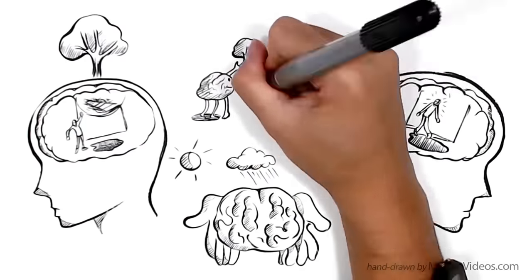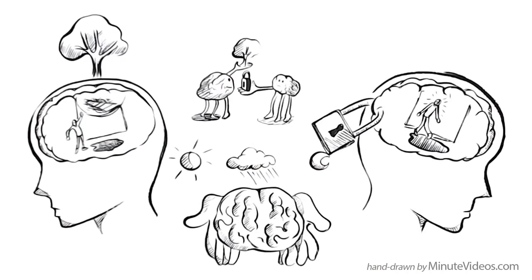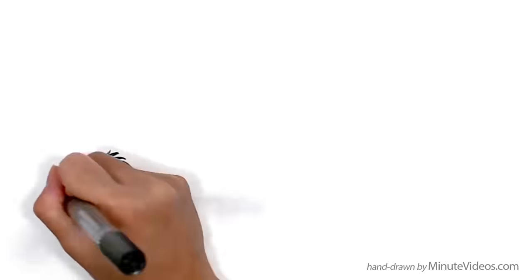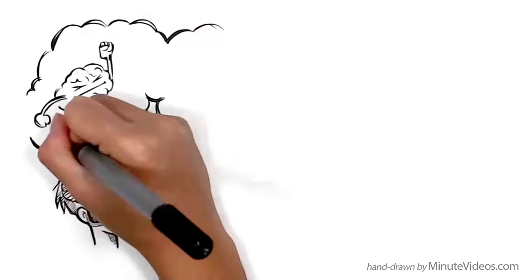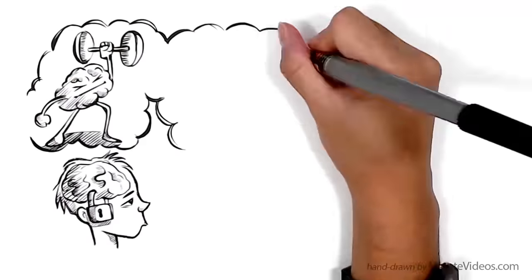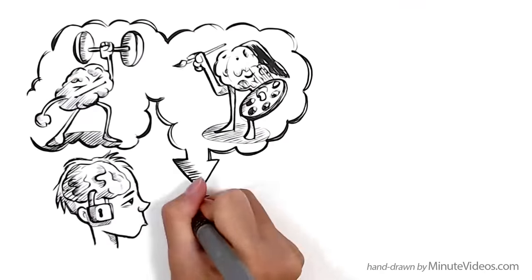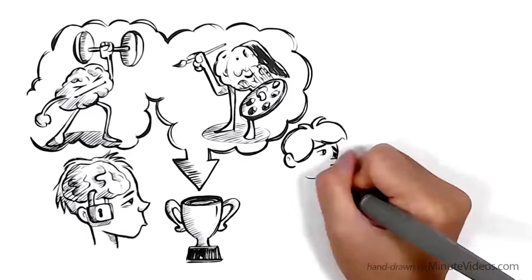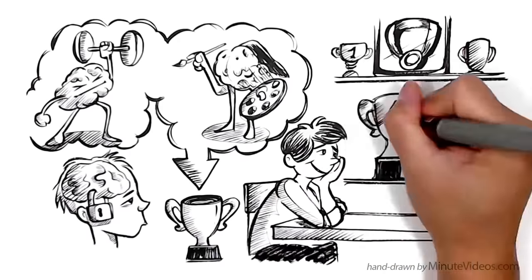Sometimes we like to switch from one to the other. People have a fixed mindset because they believe that basic qualities like intelligence or talents are fixed traits and that these traits are responsible for success. They often like to document past achievements.